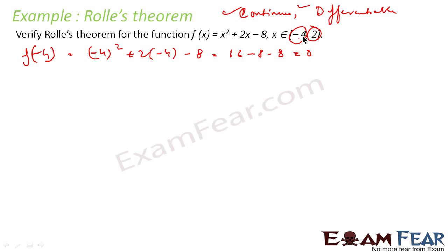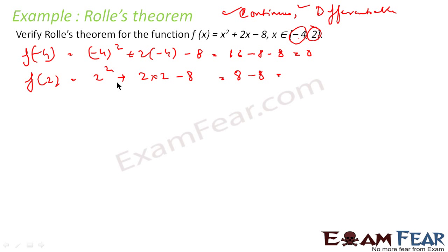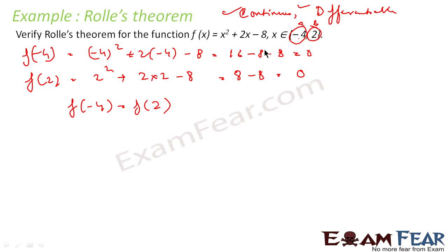So f(−4) = 0. Now let's find f(2): 2² + 2(2) − 8 = 4 + 4 − 8 = 0. Therefore f(−4) equals f(2), which means f(a) equals f(b). Assuming a = −4 and b = 2, we can say that Rolle's Theorem is applicable.